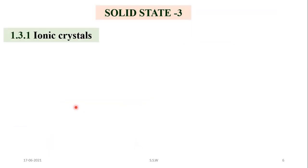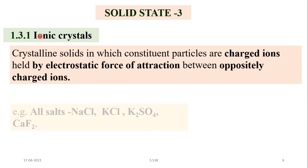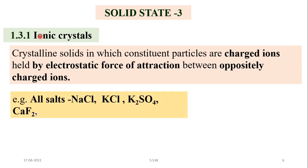Now we will study ionic crystals in detail. Ionic crystals are those in which the constituent particles are charged ions, and these charged ions are held by electrostatic force of attraction between oppositely charged ions. Examples include all salts: potassium sulfate, calcium chloride, potassium chloride, and sodium chloride.